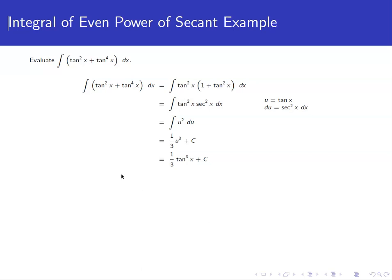When we have an even power of secant, we're going to use the secant squared as our du. So that means our u will be tangent. In this case, we get u equals tangent x.